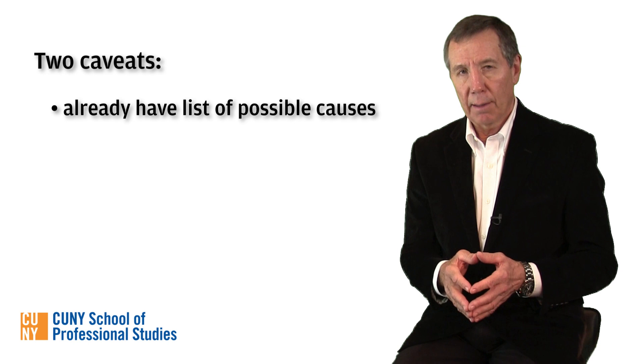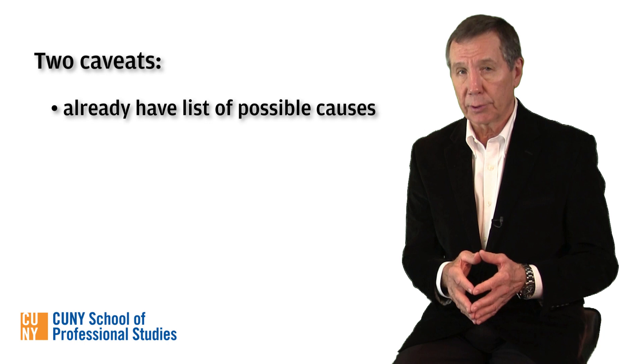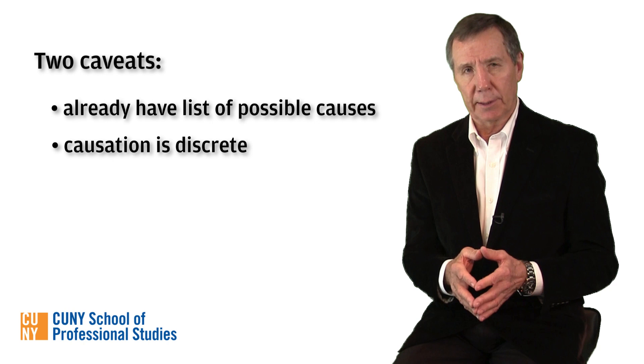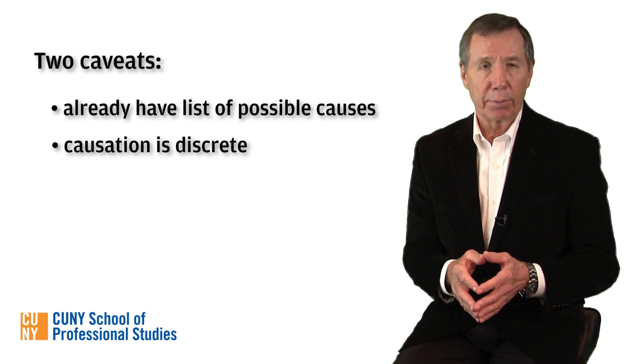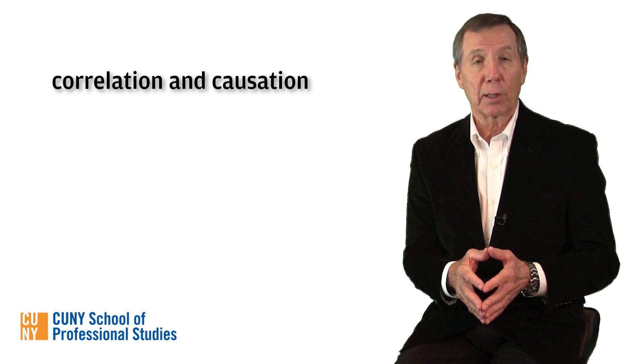Before we move on, let me issue two caveats about Mill's methods. First, his methods presuppose that we already have a group of possible causes to consider. Second, his methods assume that causation is discrete—that is, separate and distinct. He does not consider the possibility of complex combinations of causation or causal change. That said, Mill's methods have had a lasting impact on both the natural and social sciences, and are well worth employing by critical thinkers. Next up, we'll take a look at a source of considerable philosophical concern: the confusion between correlation and causation. Until then, best wishes.